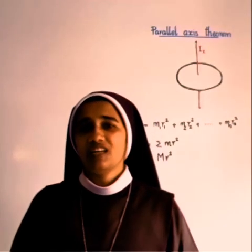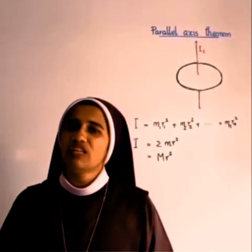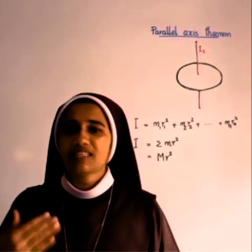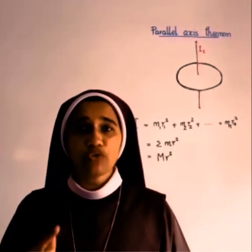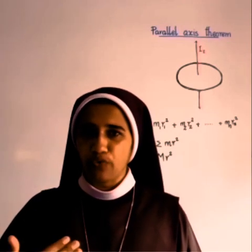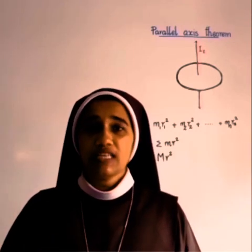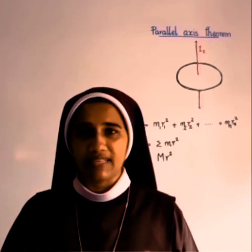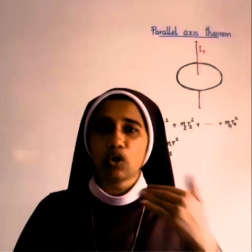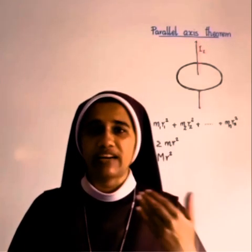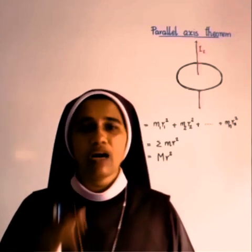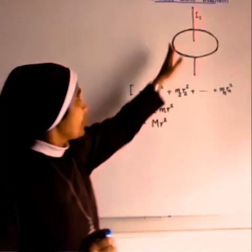We have already learned what the moment of inertia is. Let us recall that the moment of inertia of a body about an axis of rotation is the sum of the products of the masses of its constituent points and the squares of their respective distances from the axis of rotation.